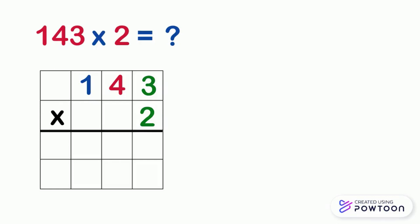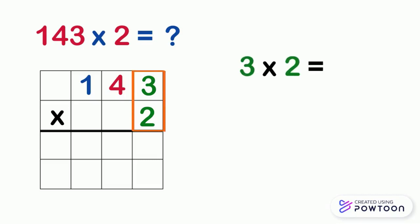As in addition or subtraction, we will start with the 1's digit. We have 3 times 2. 3 times 2 equals 6. So we will write 6 in the answer box in the 1's place column.